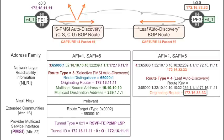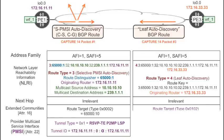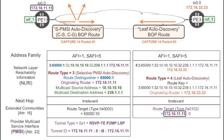Leaf auto-discovery routes are much more personal than the anonymous source tree join routes. The route target is built in such a way that this leaf auto-discovery route will only be imported by PE1. Why is it followed by value 0 instead of an identifier of VRF1? The route key contains enough information for PE1 to know that this is about VRF1.